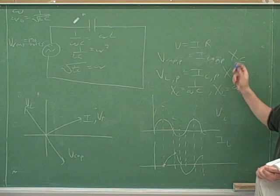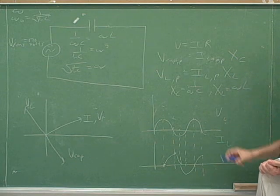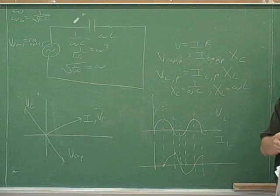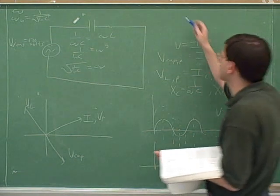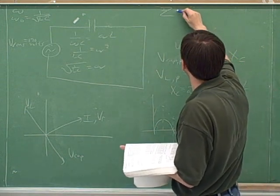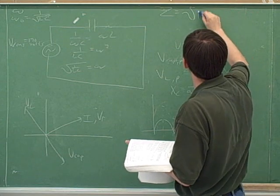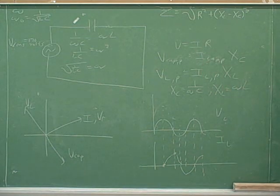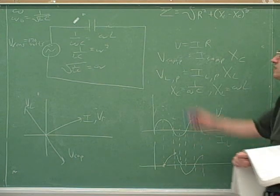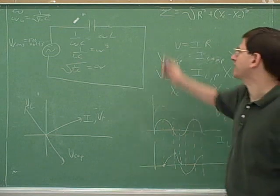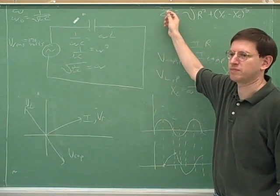R is the resistance of the resistor. XC is kind of like the resistance of the capacitor. XL is kind of like the resistance of the inductor. How can we find the total resistance of the whole circuit? That's what's called the impedance — the total resistance of the whole circuit — and the symbol for that is capital Z. Here's the formula: the impedance is the square root of R squared plus the difference between the two reactances squared. We can treat this as the overall equivalent resistance and plug it into Ohm's law.